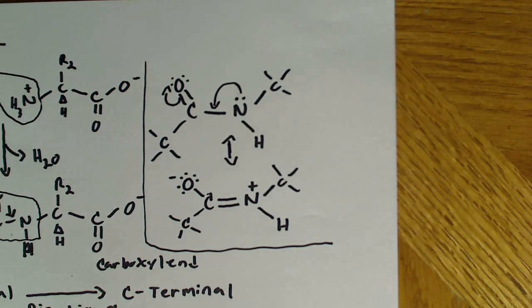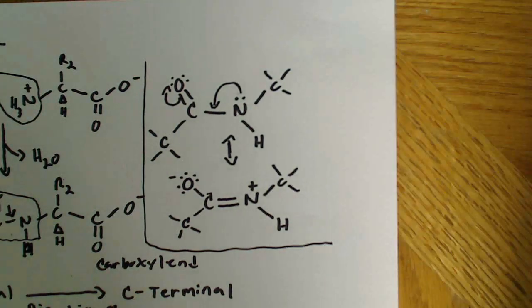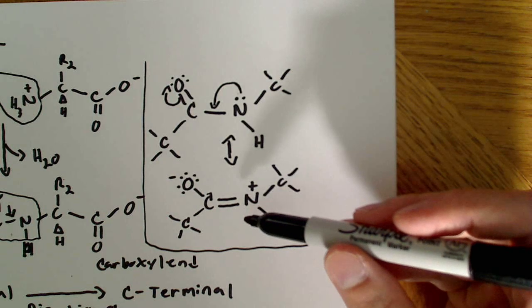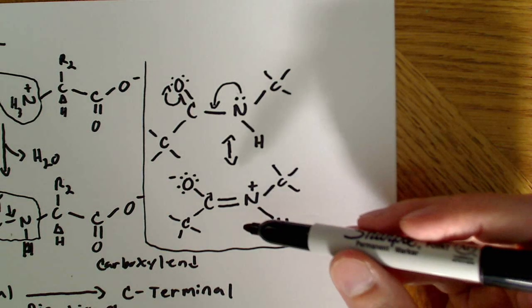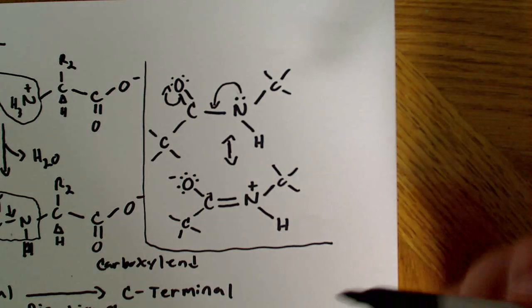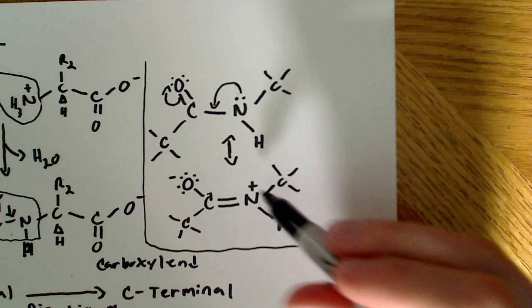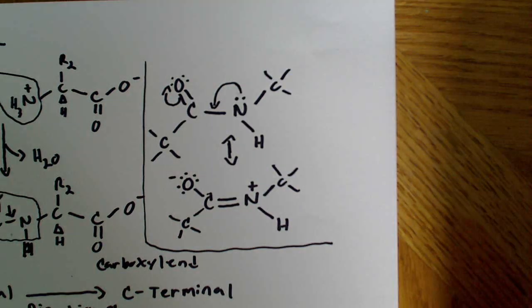Now, you might be saying, well, why is that significant? What the hell does this mean, and why does this make a difference? And the reason it makes a difference is because this partial double bond character here introduces rigidity. You learn this in organic chemistry. When you have a double bond, it's a little bit more rigid than a single bond, and there's not free rotation. There's no free rotation around this double bond.